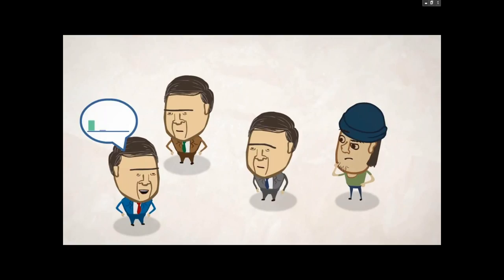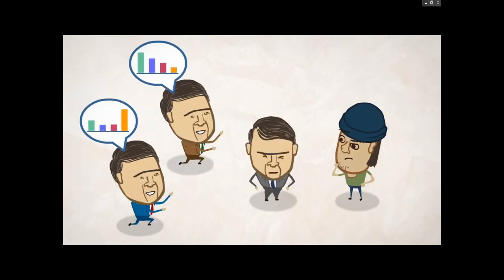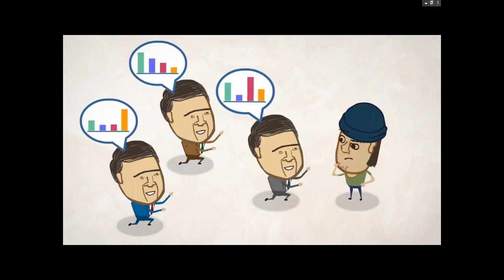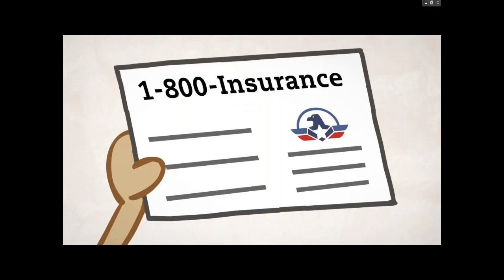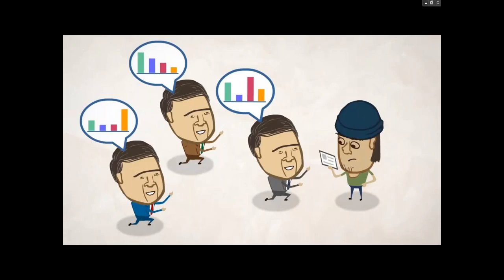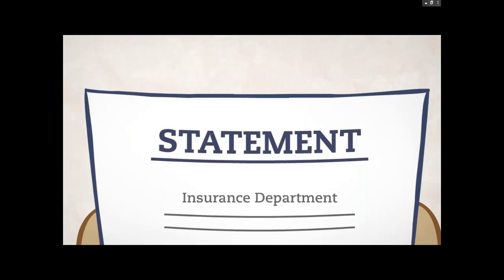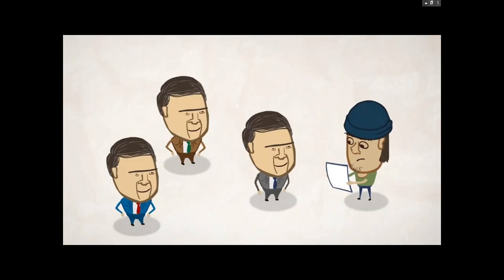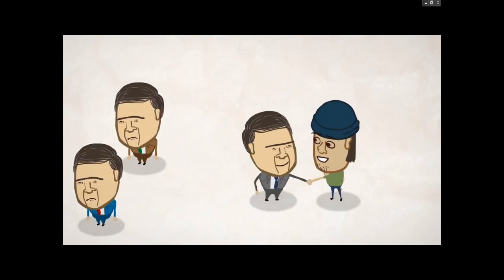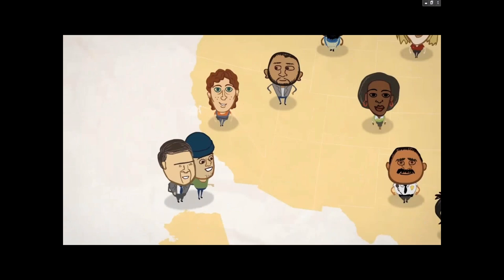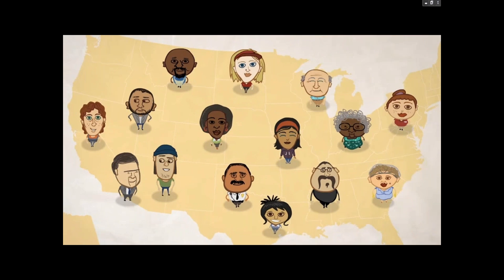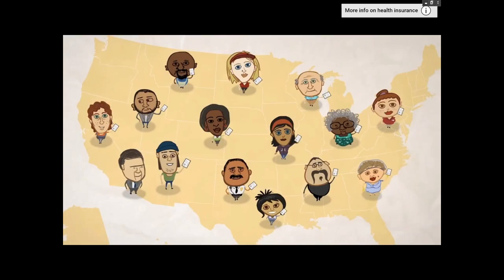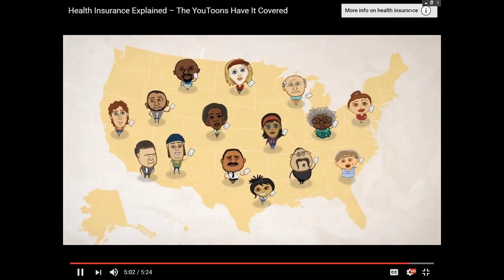There's a lot to think about when you choose an insurance plan each year. Some plans may have low premiums but fewer doctors or hospitals and a higher deductible. There are trade-offs, and understanding and choosing among plans isn't always easy. If you have questions, call your health plan and ask, or check with your hospital or doctor. Your state insurance department or consumer assistance program can help. With the Affordable Care Act, there's more support for consumers, so take advantage of it. Having health insurance protection is a good thing, especially when you know how it works.